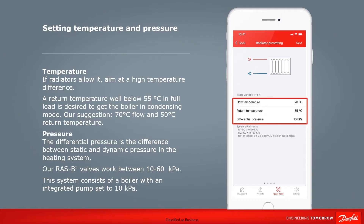With what we've just learned in mind, let's return to the app. There are three pieces of information needed here: the flow temperature, the return temperature, and the differential pressure. The differential pressure is the difference between the static and dynamic pressure in the heating system.